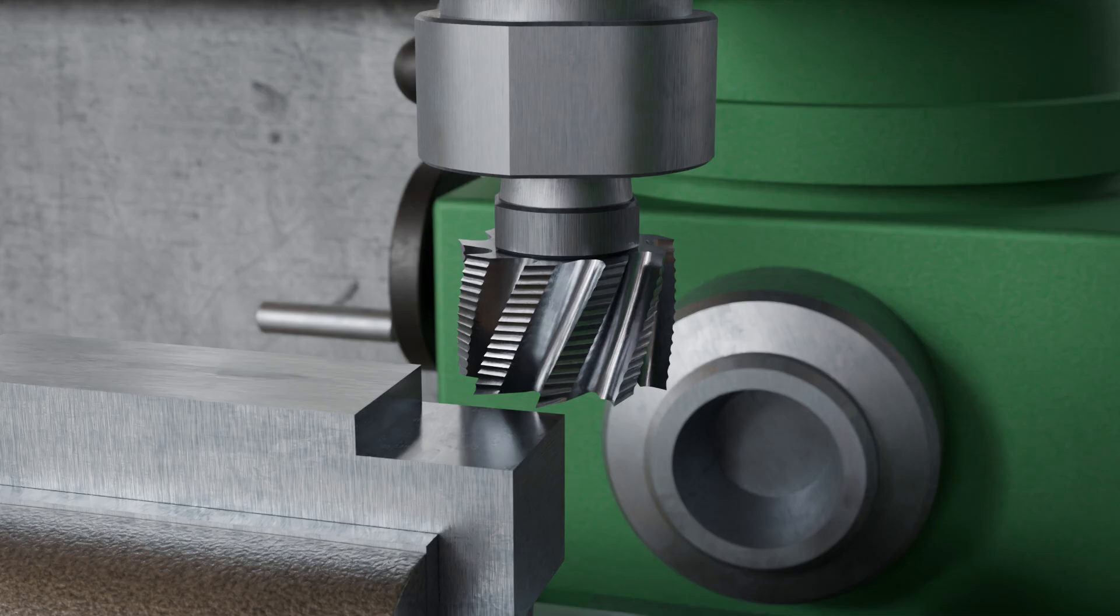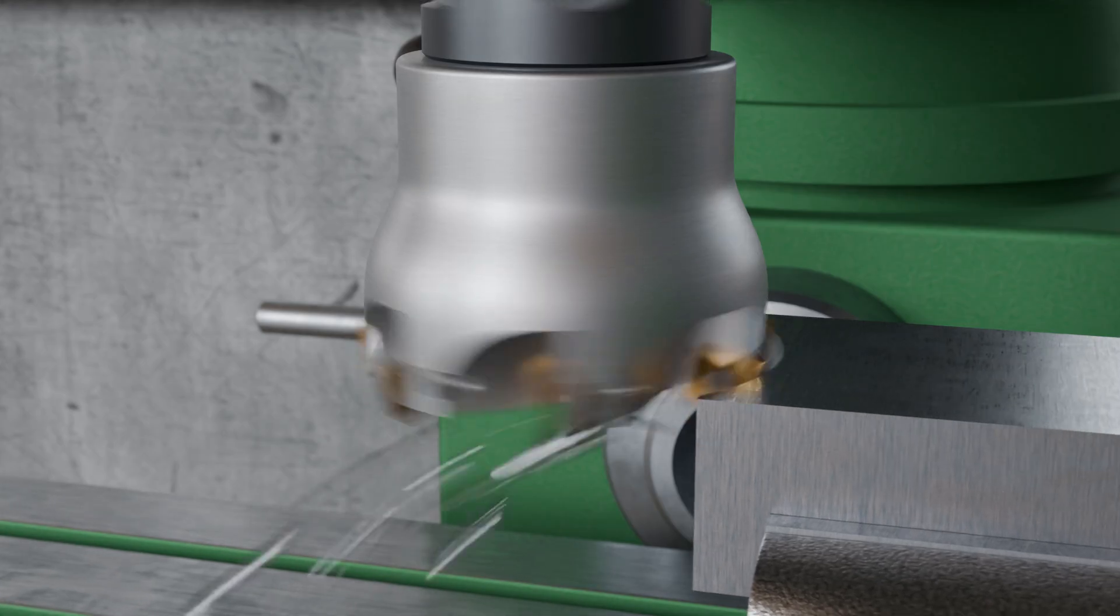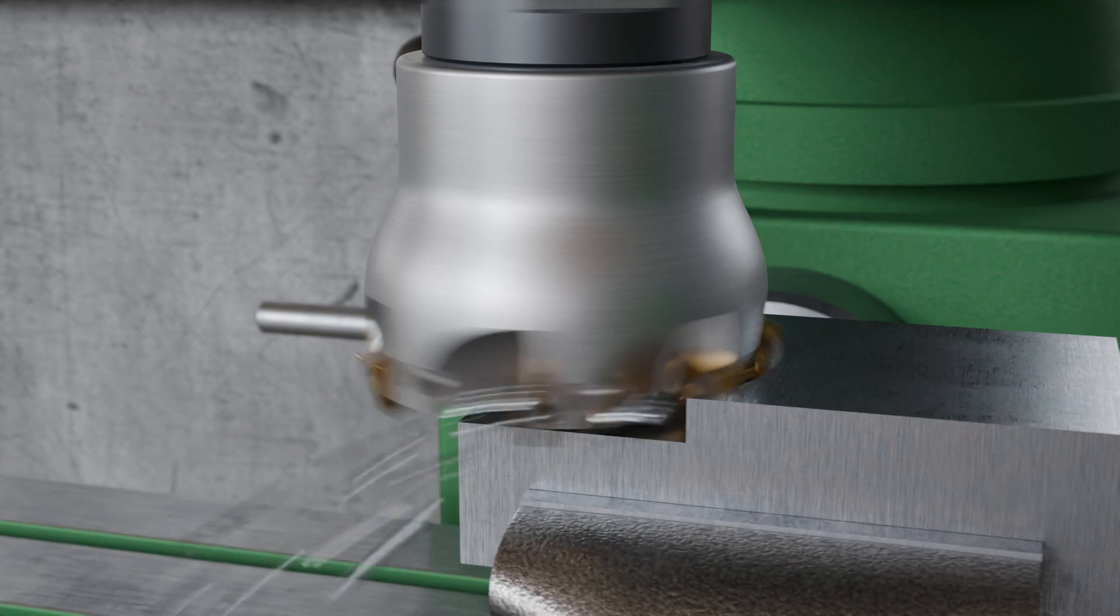For high material removal rates during face milling, the use of so-called face mill cutters is recommended. These are equipped with indexable carbide inserts on the face side. These carbide cutting edges allow for very high cutting speeds, which significantly increases the material removal rate.